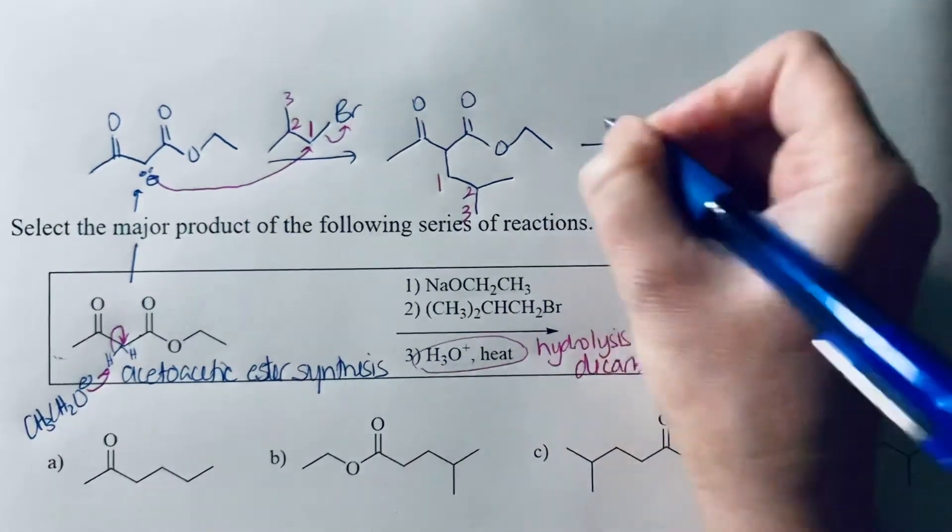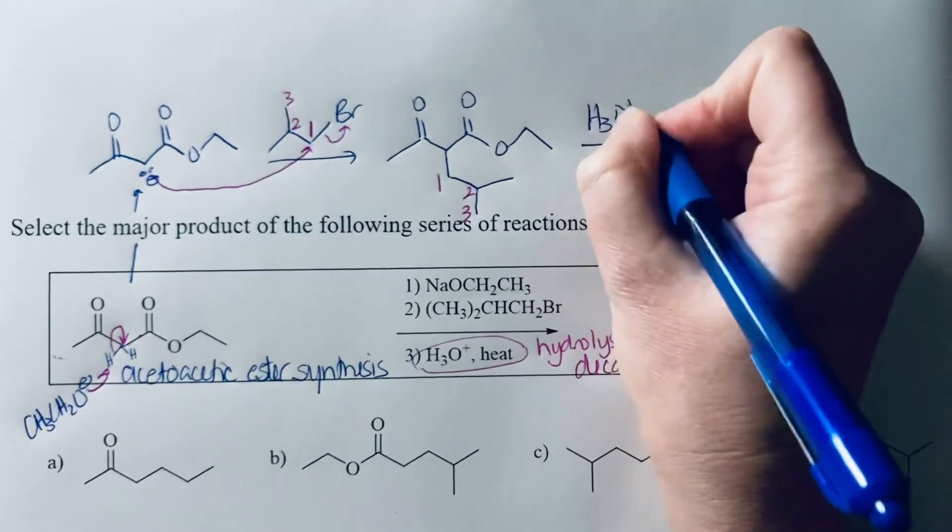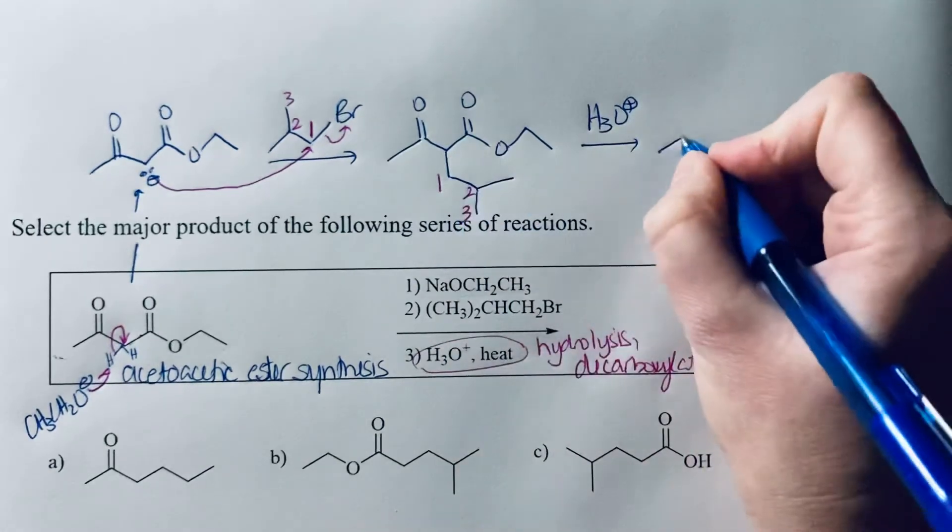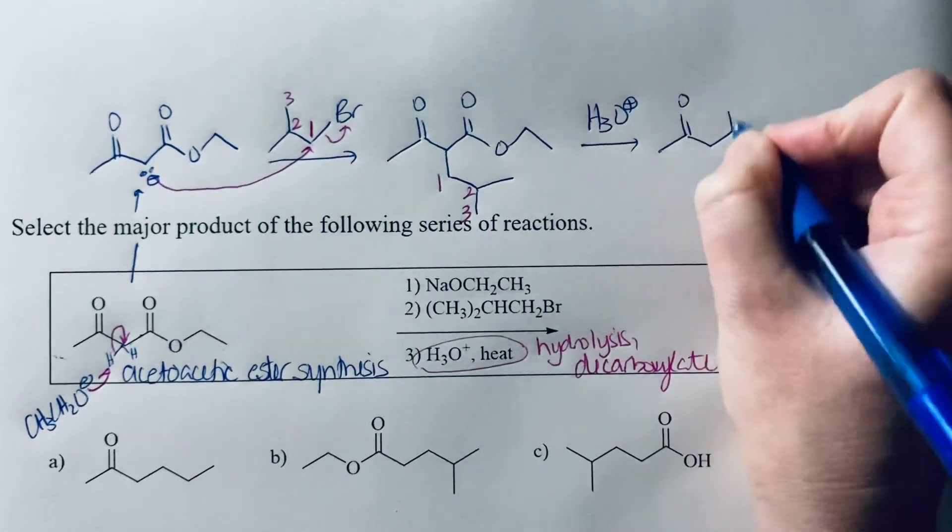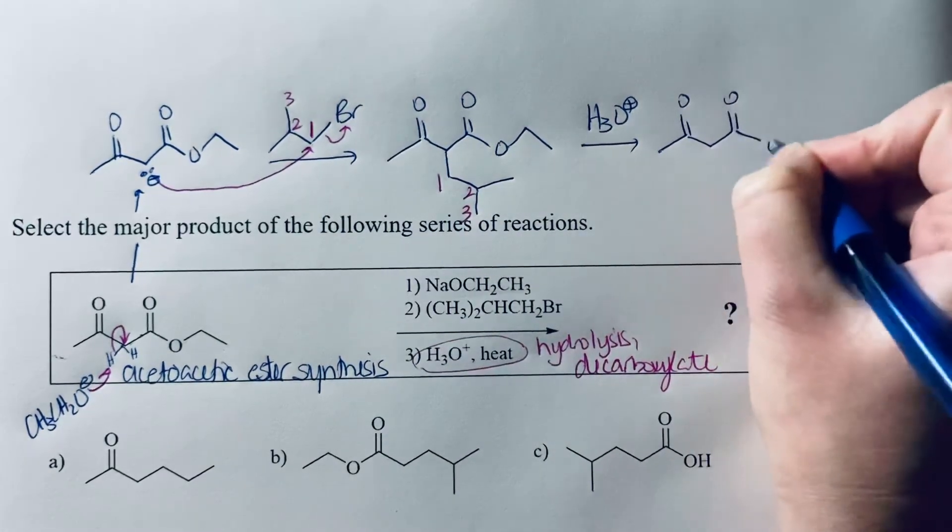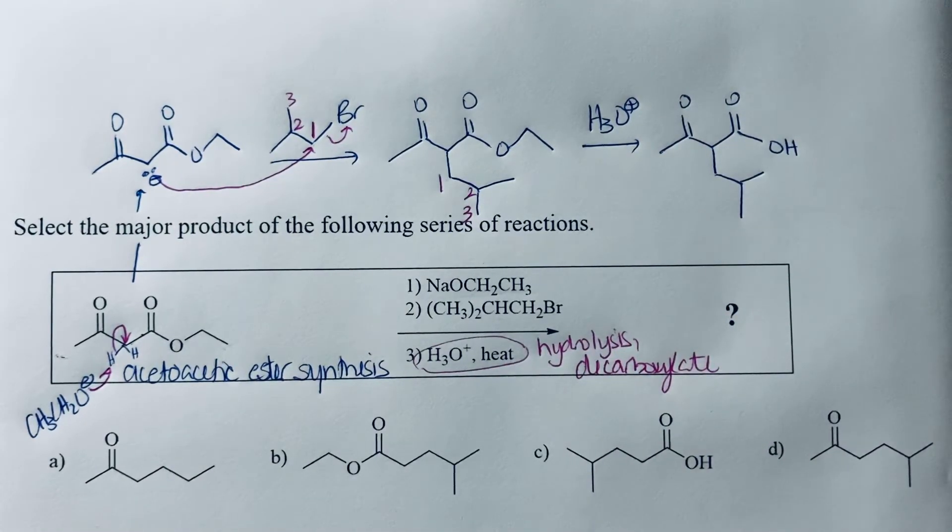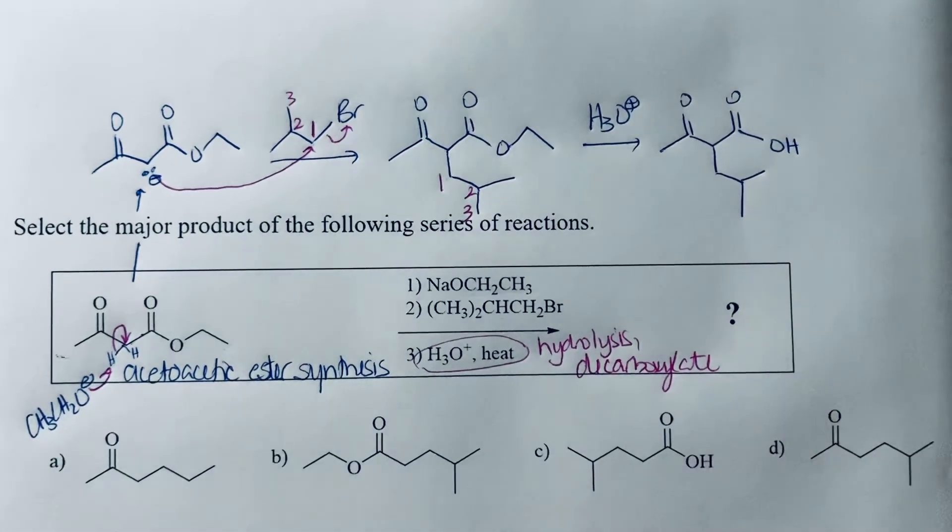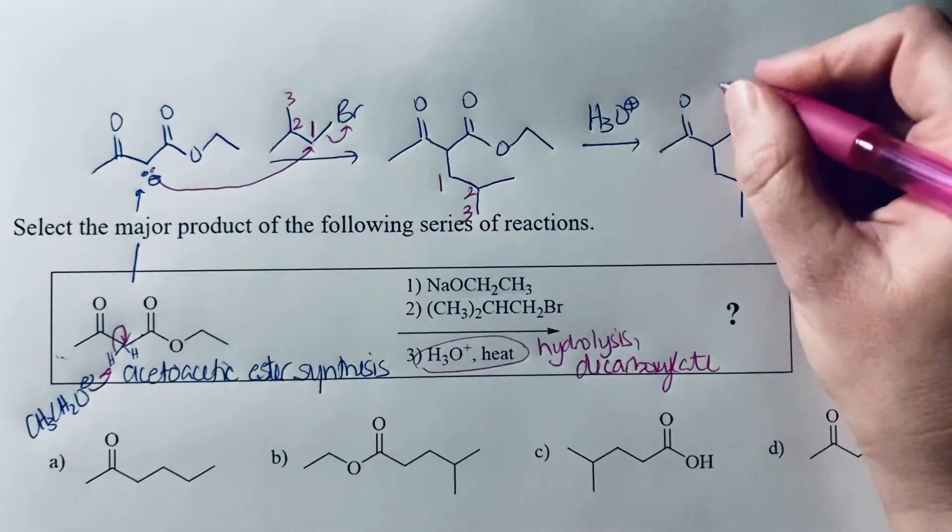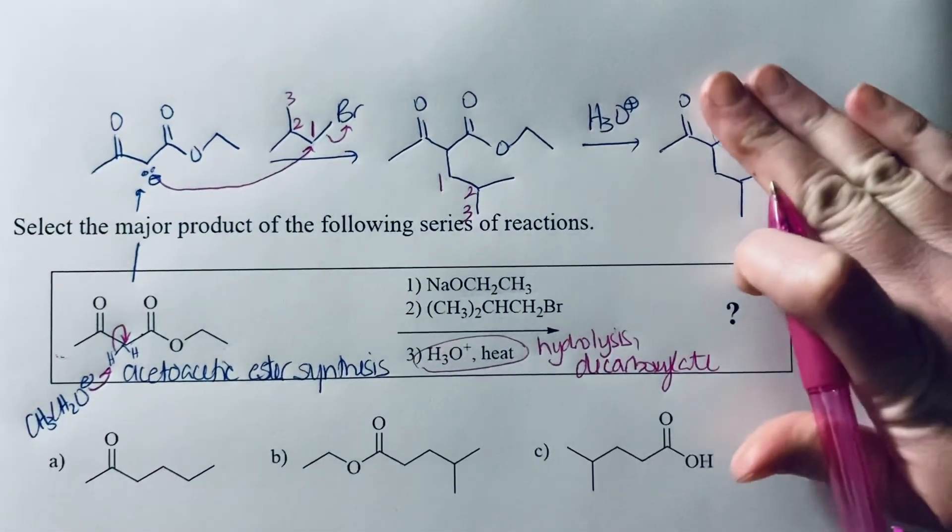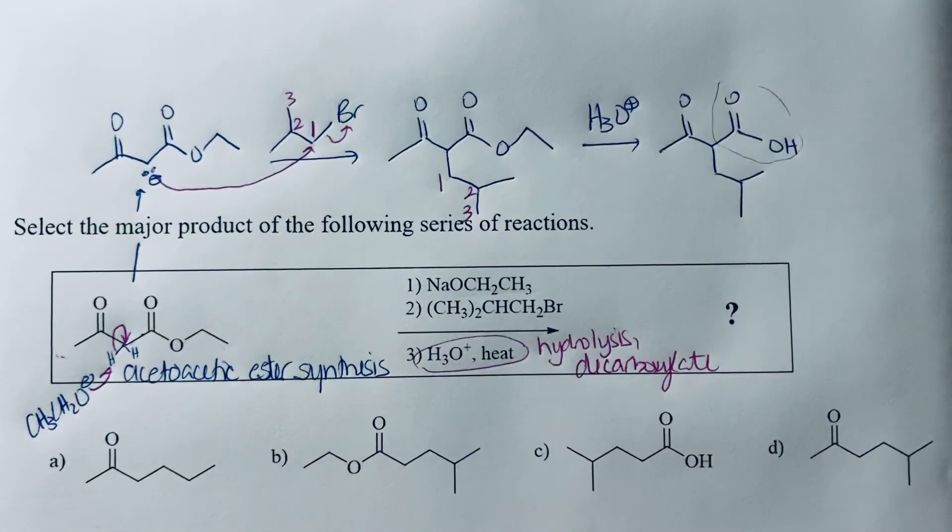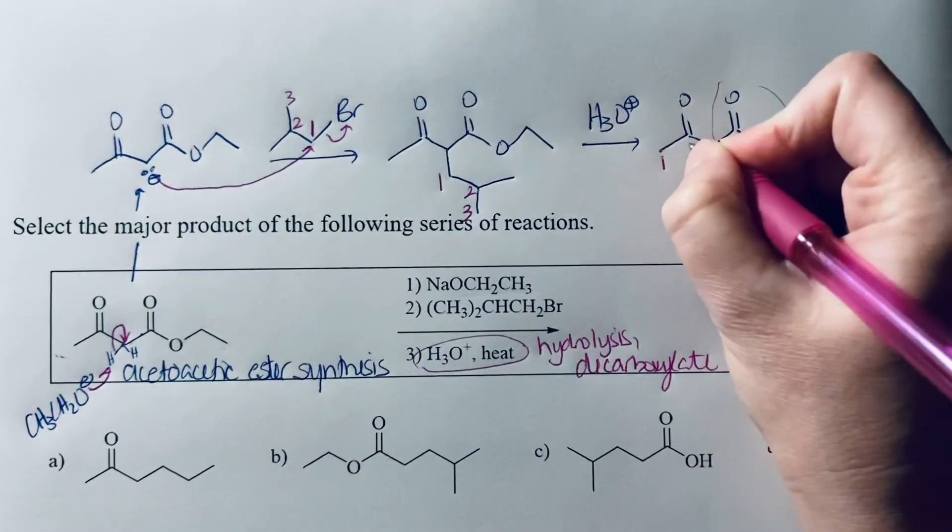Let's go ahead and draw the hydrolysis product. So that's transforming the ester to the carboxylic acid. And then when you decarboxylate, you're essentially losing this group in your decarboxylation. So you kind of just take that off and be able to see your product.